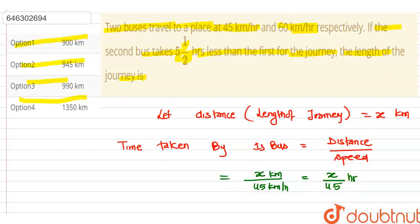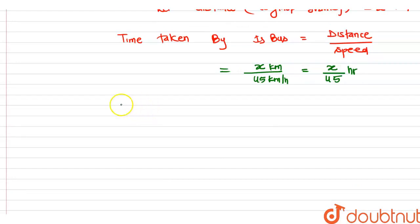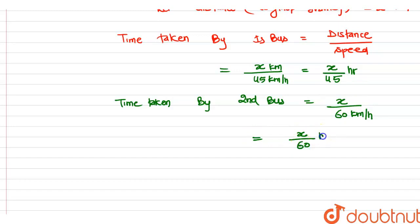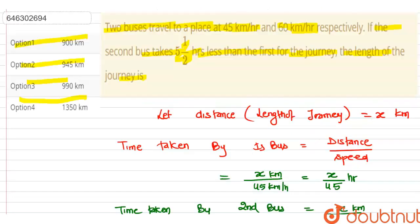Now we find the time taken by the second bus. The speed of the second bus is 60 km/h. The distance is X kilometers, so the time taken by the second bus equals X divided by 60 hours.